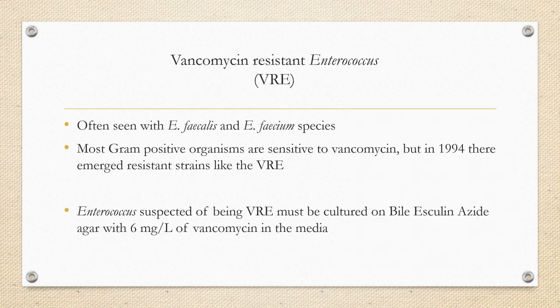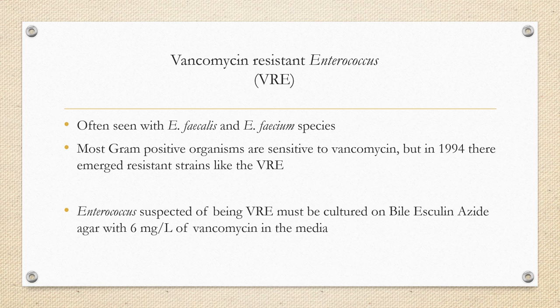VRE stands for vancomycin-resistant enterococcus. Enterococcus is basically a streptococcus that lives in the gut, and most gram-positive cocci are sensitive to vancomycin. However, Enterococcus faecalis and Enterococcus faecium can be resistant. To detect VRE, the organism is placed on bile esculin azide agar with 6 micrograms per liter of vancomycin — if it grows, it is confirmed as VRE.